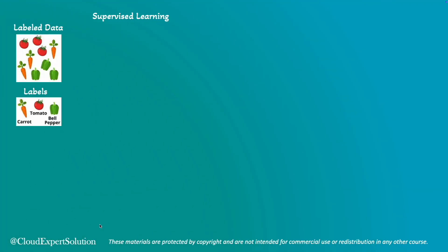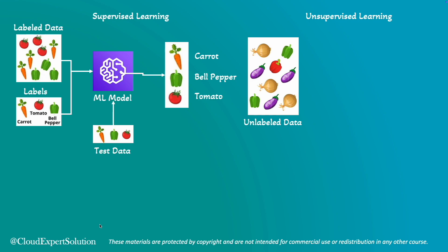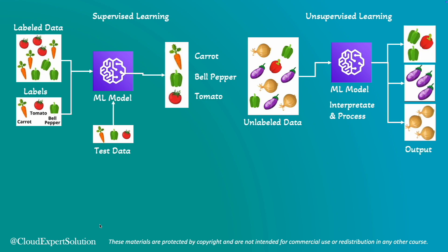In supervised learning, we have labeled data and the images are labeled. We use this training dataset to train our machine learning model. Post-training, if you present test data to the model, the model will predict the output and give the outcome. For unsupervised learning, we have a pool of unlabeled data. When you feed this unlabeled data to a machine learning model, the model will interpret and process the data, extract features, categorize images based on those features, and generate output.